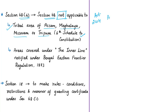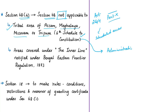The Fifth Schedule deals with the administration and control of scheduled areas and scheduled tribes in any state except Assam, Meghalaya, Tripura, and Mizoram. The Sixth Schedule, on the other hand, deals with the administration of tribal areas in these four northeastern states of Assam, Meghalaya, Tripura, and Mizoram.